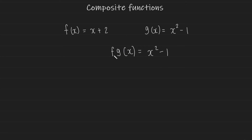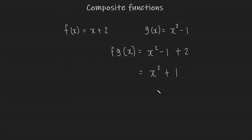f operates on x² − 1 and adds 2 to it, so we get (x² − 1) + 2. Simplifying, we end up with x² + 1. This is your composite function f(g(x)).